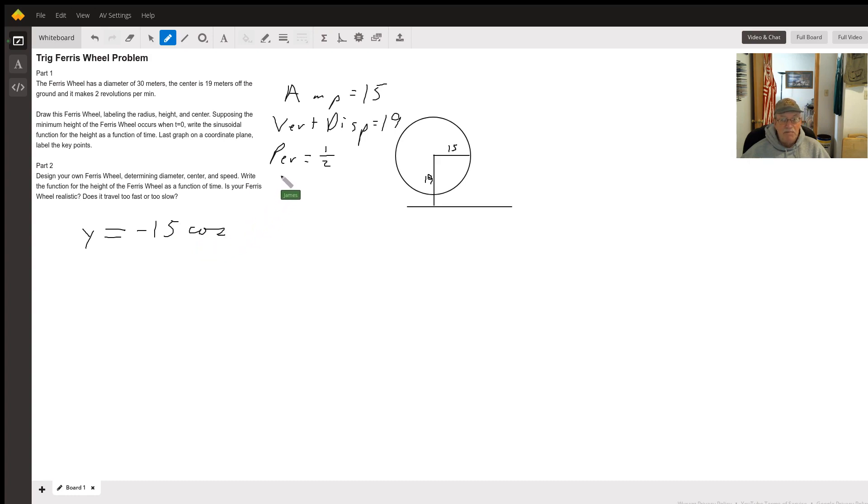Well, we have to figure out what b is. b equals two pi over the period. It's one half. So b will equal four pi. That's going to be four pi t plus our vertical displacement, which is 19.